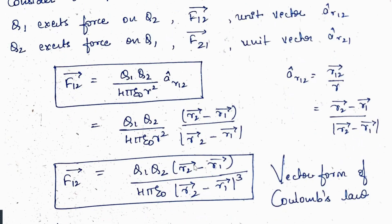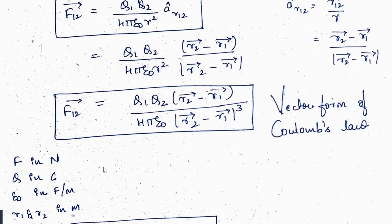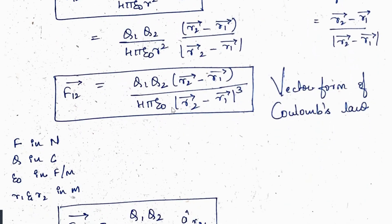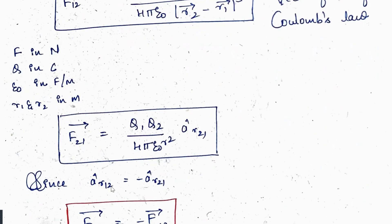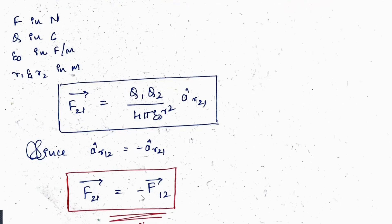Substituting âr12 into the force equation: since r = |r2 − r1|, it appears three times, giving the complete vector form of Coulomb's law. F is in newtons, Q in coulombs, ε₀ in farads per meter, and r1, r2 in meters. Since âr12 = −âr21, we have F21 = −F12, confirming Newton's third law.